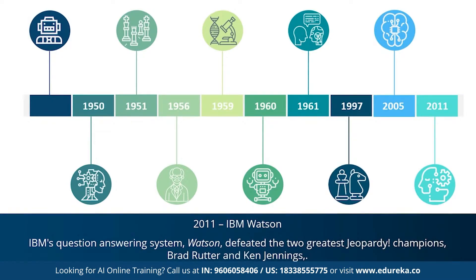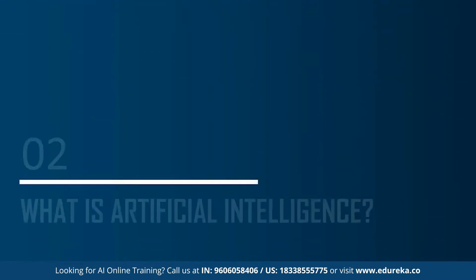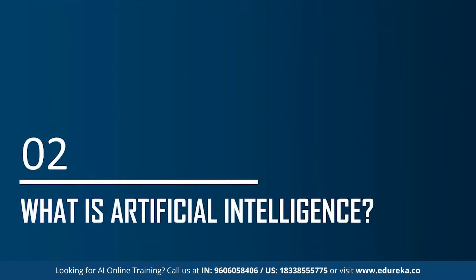Since the emergence of artificial intelligence in the 1950s, we've seen exponential growth in its potential. AI covers domains such as machine learning, deep learning, neural networks, natural language processing, knowledge base, expert systems, and so on. Now let's move on and understand what exactly artificial intelligence is.